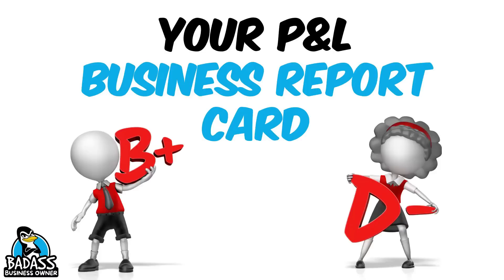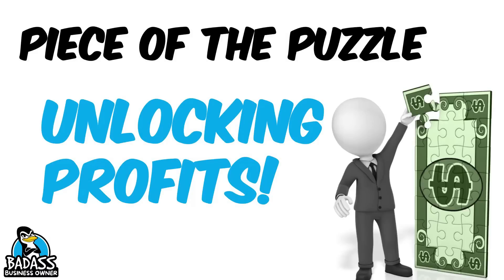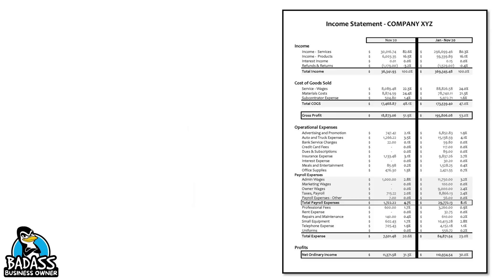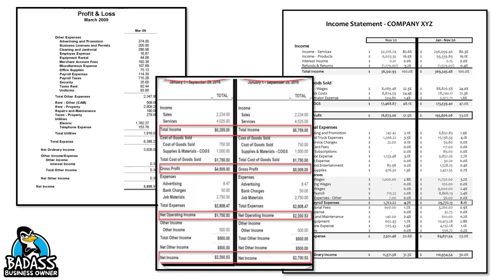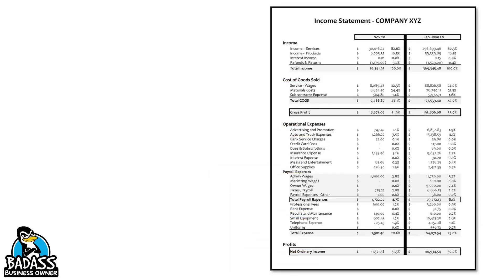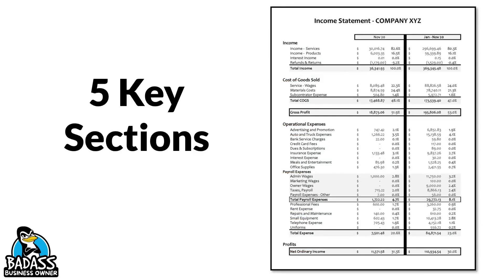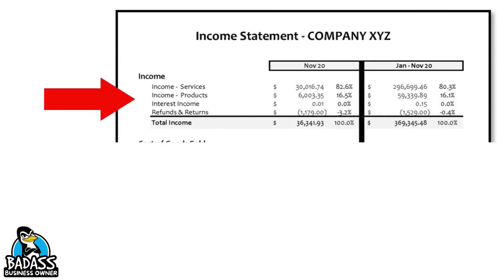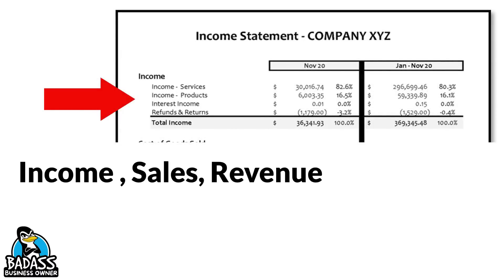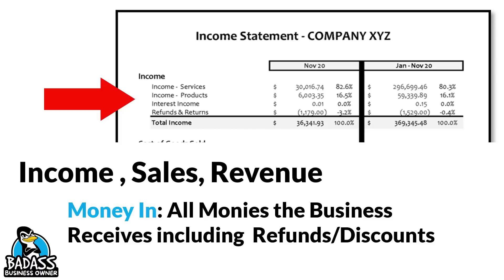Your profit and loss is your business's report card, so it's really important you understand it because at the end of the day, it is the piece of the puzzle that helps you unlock your profits. Now, there are going to be a couple different versions of a P&L that are out there. Don't get hung up on the way that yours happens to look. They all have the exact same five key sections. The first section is the income line, and the income section is going to be called either income, sales, or revenue. Basically, it's all the money that is coming in to the business.